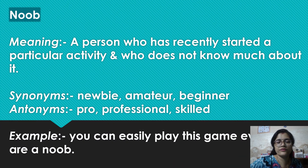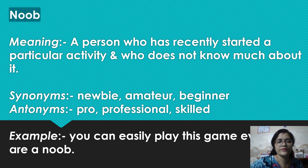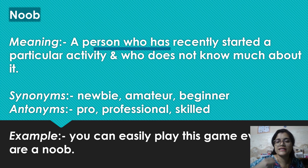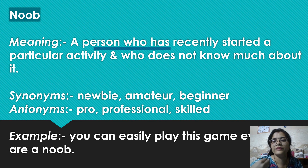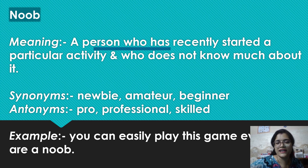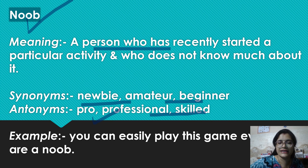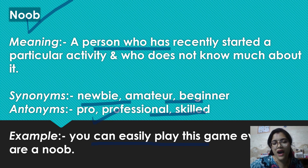Okay, next important word here is noob. It's a very new word but kaafi zyada use mein aa raha hai in dino. Iska matlab hota hai: a person who has recently started a particular activity and who does not know much about it. Jab aap koi nayi cheez shuru karte hain, toh aap us field mein new hote hain — amateur hote hain, ek beginner hote hain. Synonyms: new, amateur, beginner. Antonyms: pro, professional, ya phir skilled. Example: You can easily play this game even if you are a noob.